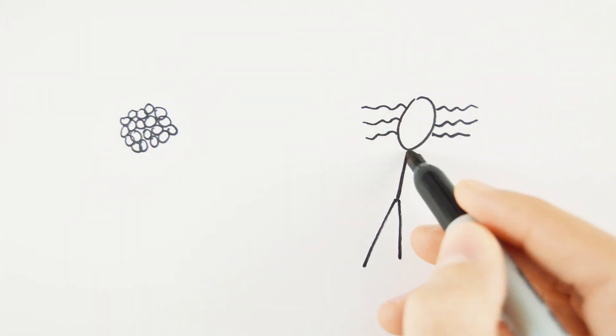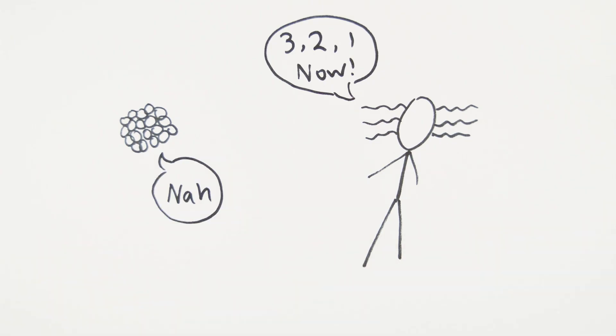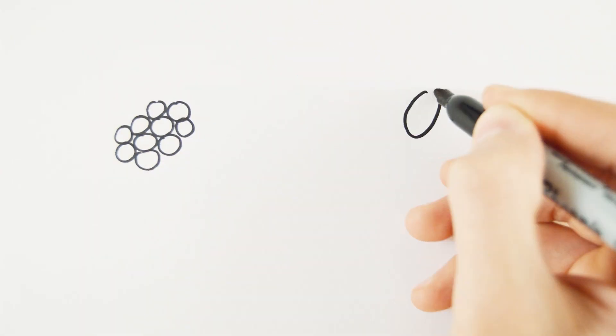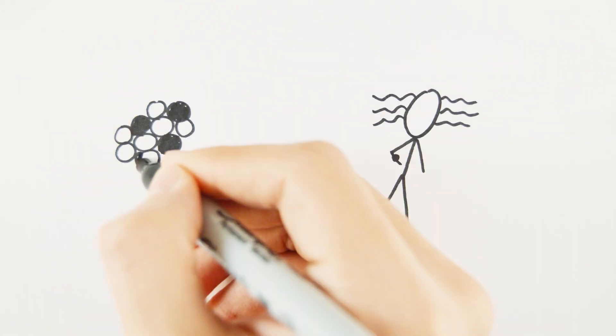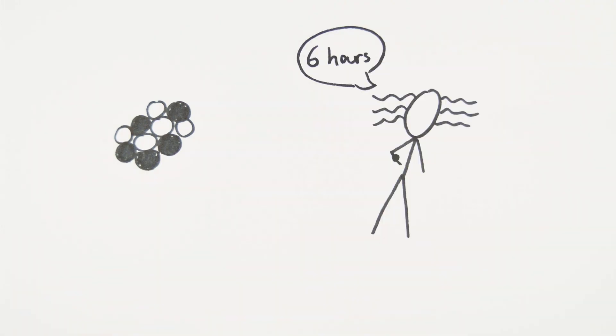It's impossible to predict when an individual atom might decay because it's completely random. What you can do is measure the time it takes for half the atoms in a radioactive substance to decay. We call this a half-life.